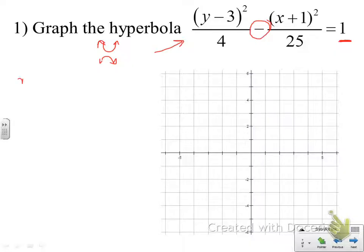So let's find the center. Remember the center is the h and the k. Be careful. The h is paired with the x. So the center is negative 1, positive 3. Let's go ahead and plot that first. Center's right there.